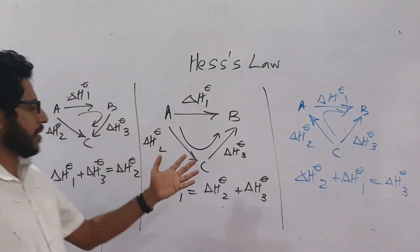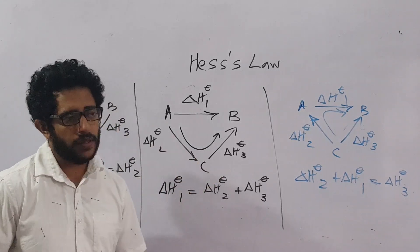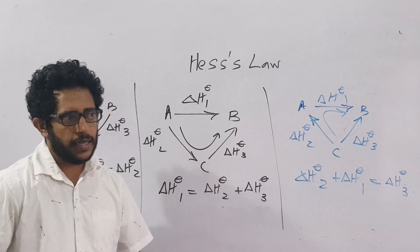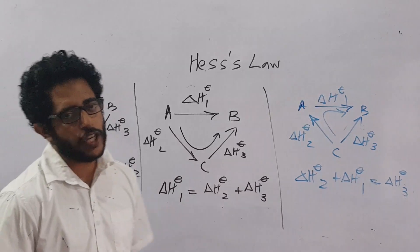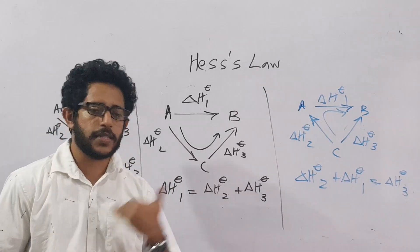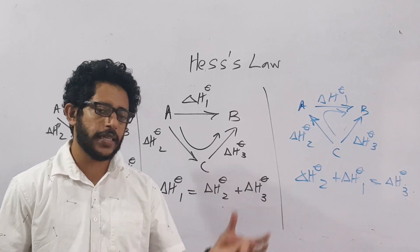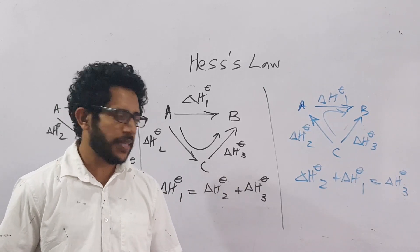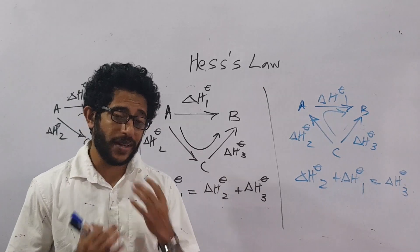This is what we call as the Hess cycle, the Hess's law. The basic idea of Hess's law is, Hess suggested the enthalpy change of a chemical reaction doesn't depend on the path or the route it takes. That's what the Hess's law suggests.